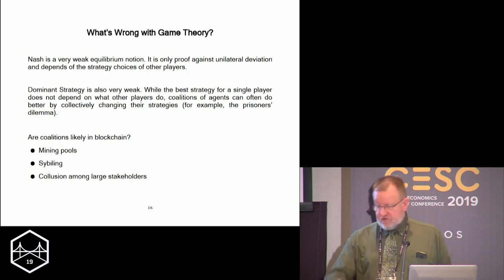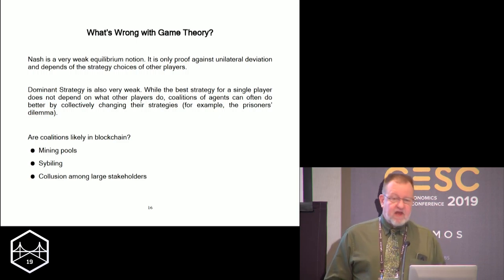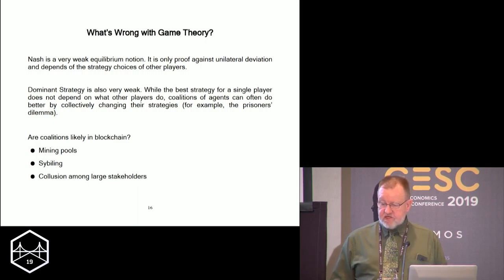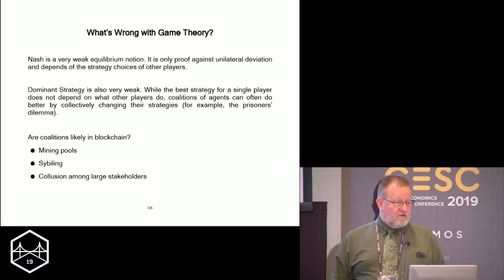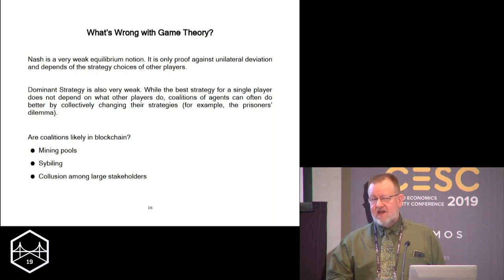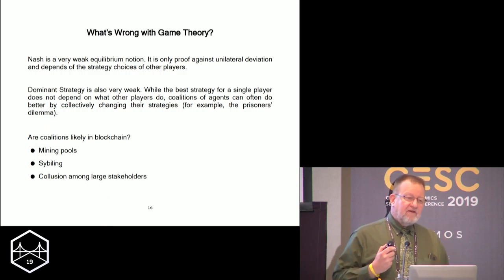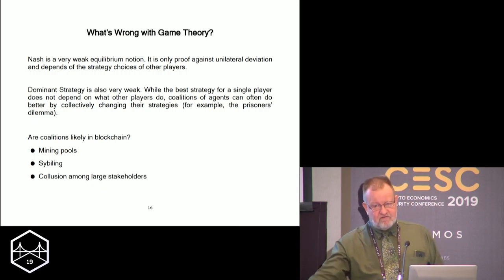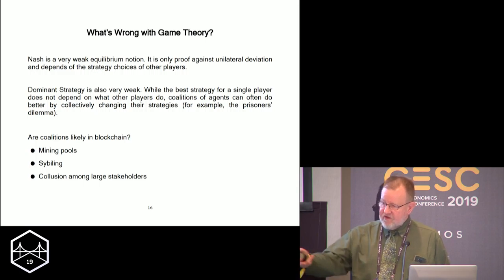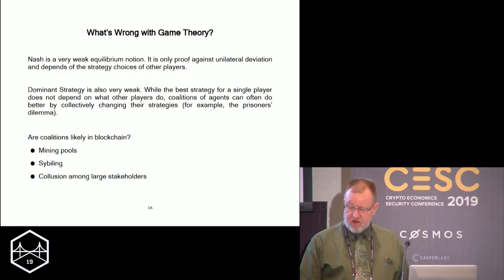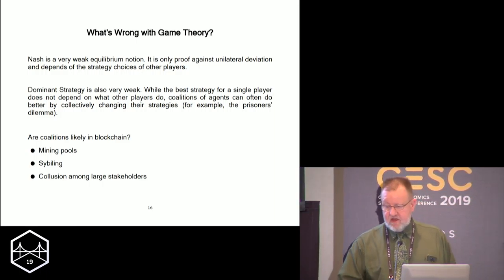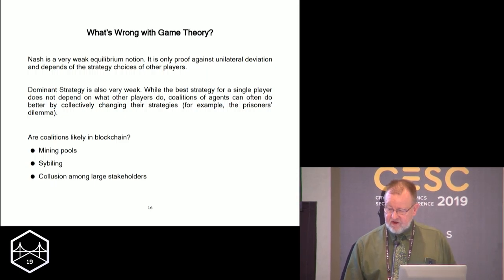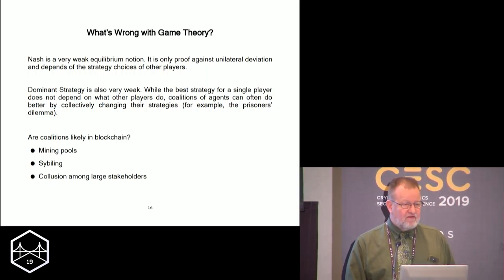Nash is too weak because it's only proof against unilateral deviation — it's not proof against deviation by larger coalitions. Dominant strategy would seem to be better because it says no matter what anybody else does, I should do a certain thing. That sounds very strong, but it's not, because as a coalition we might do better. The classic example is the prisoner's dilemma — a dominant strategy is to confess, but as a group we cannot confess and do better. So dominant strategy is no good. If we believe that coordination is possible, we have to have more than proof against unilateral deviation. And clearly collusion is possible and happening all the time in blockchain: mining pools, coalitions among large stakeholders, concentration of wealth.